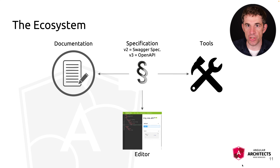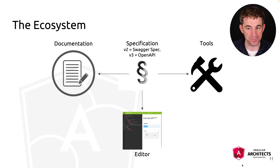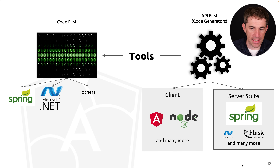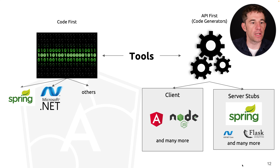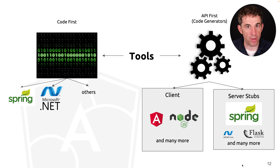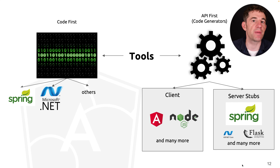There are two different approaches: code-first and API-first. The code-first approach means that one of the available tools — for Spring, .NET, or something else — analyzes our controllers, finds the endpoints, requests, responses, and all those types. It takes this information and generates an OpenAPI specification on demand. So first we implement it, and then comes the specification.